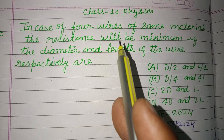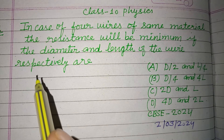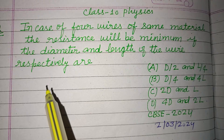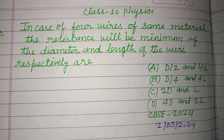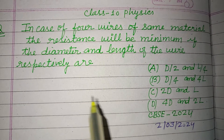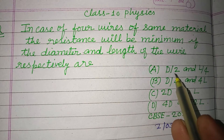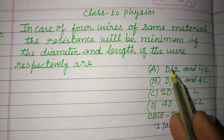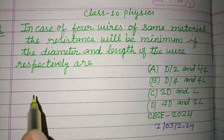In this case, 4 wires of the same material are given. We need to find which wire has the minimum resistance, given that the diameter and length of the wires are different.